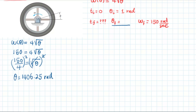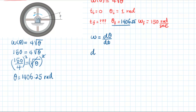That gives theta final equal to 1406.25 radians. So we have found the final angular position. Now we want to find the time, so let's write the kinematic equation for the angular velocity of the flywheel: omega equals delta theta divided by delta t. Rearranging, delta t equals delta theta over omega.